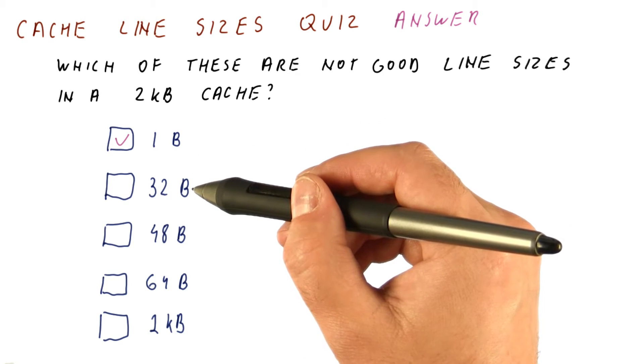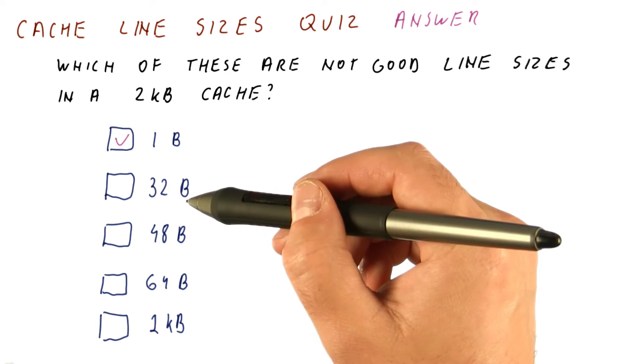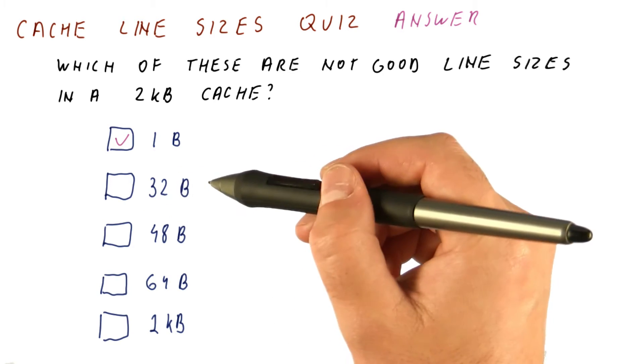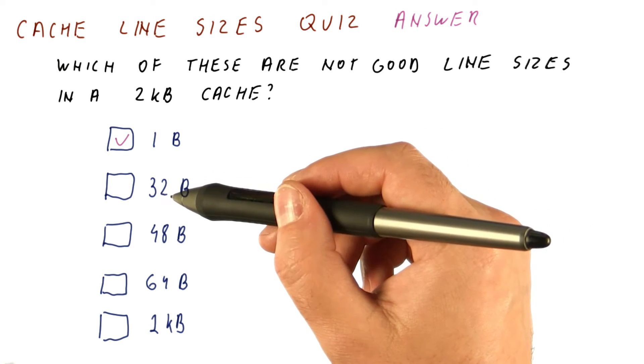32 bytes is a good size. It exploits spatial locality, it's not too large, and it's a power of two, so we can easily locate blocks. If I give you an address, you can easily find what block does it belong to.